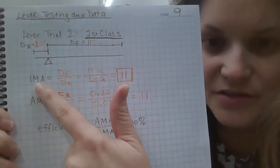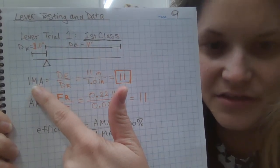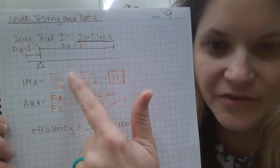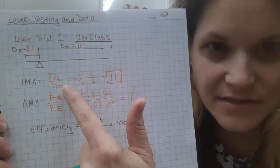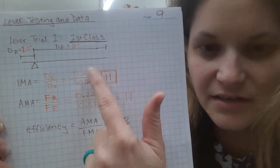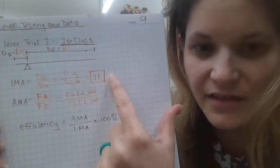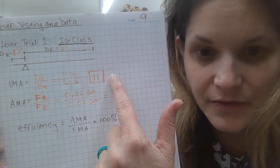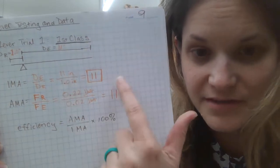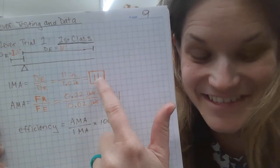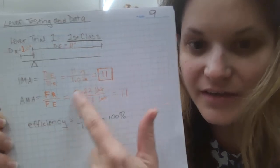So then I plugged that into my ideal mechanical advantage formula. That's effort distance divided by resistance distance. And then I did 11 inches divided by 1.0 inches. That's exactly 11. So I put that zero there because now I can make that 11 instead of just 10.